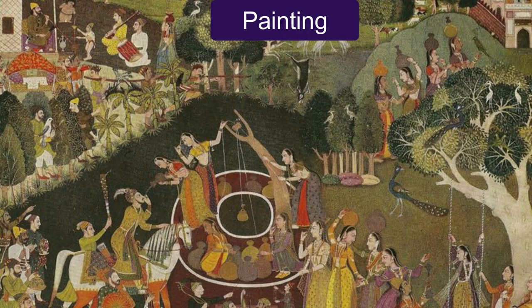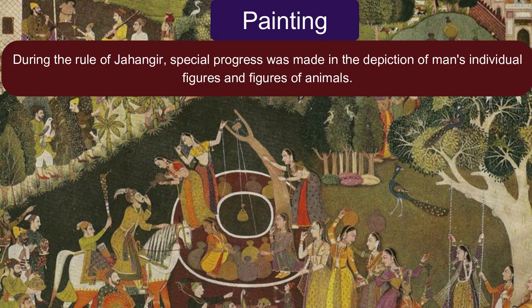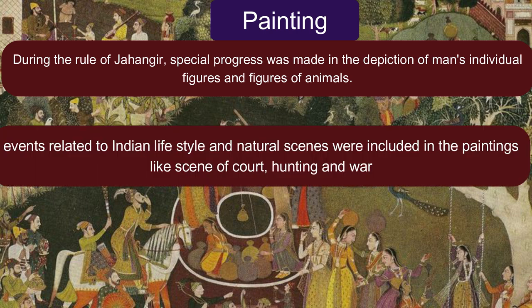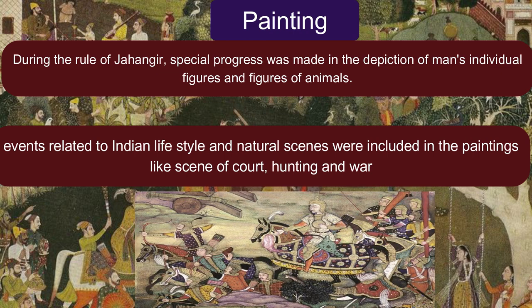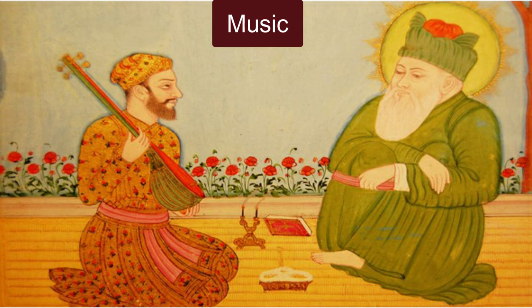The Mughals made special contribution in the field of paintings. Mughal painting reached its peak under Jahangir. Special progress was made in the depiction of individual human figures and figures of animals. They included events related to Indian lifestyle and natural scenes in their paintings, such as scenes of court, hunting and war.